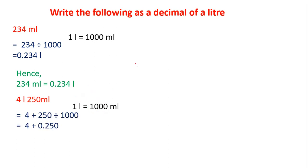I am writing 4 as it is. Then this 250 will become 0.250. Now we will add these two numbers row-wise, starting from the lowest place to the highest place. The lowest place is the thousandths place. There is no thousandths digit in 4, so I will write 0 as it is.